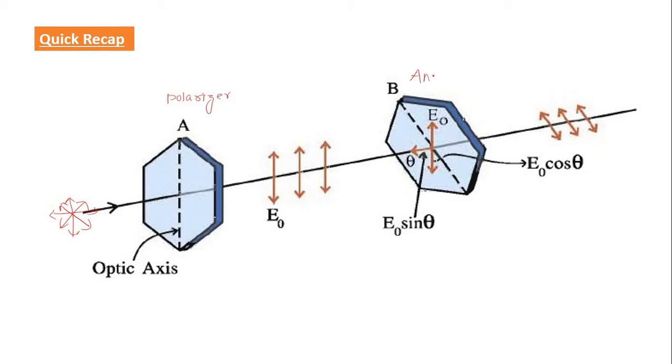This one is called analyzer. This intensity was I0, this intensity was I2, and this intensity was I1. I told you that intensity I1 is half of I0, so there is 50 percent reduction of the light energy when it passes through the polarizer and becomes polarized.